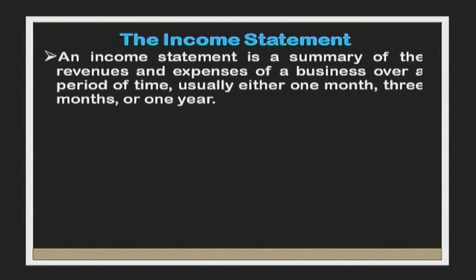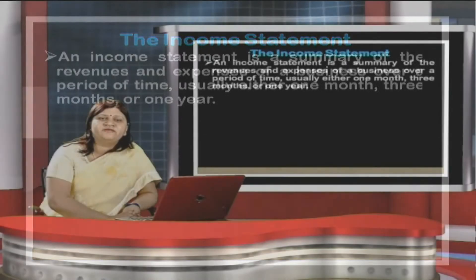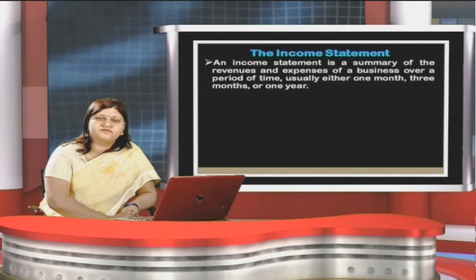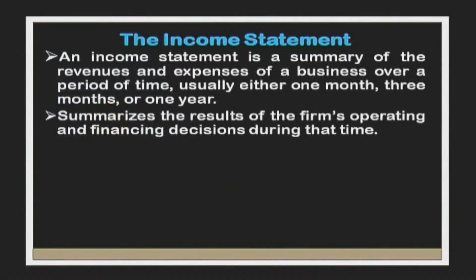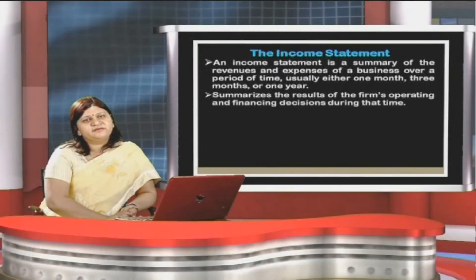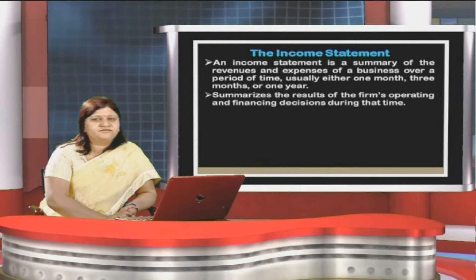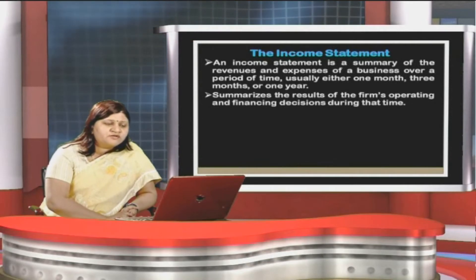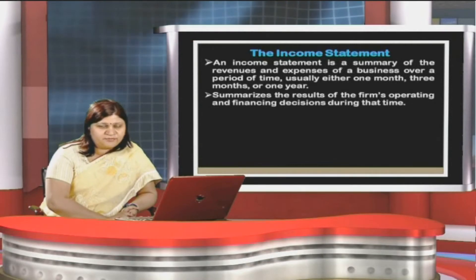An income statement is a summary of the revenue and expenses of a business over a period of time — usually one month, three months, or one year. It summarizes the results of the firm's operating and financial decisions during that period. The investing activities would be reflected in the balance sheet. Operating decisions apply to production and marketing such as sales or revenue, cost of goods sold, and administrative and general expenses including advertising and office salary.